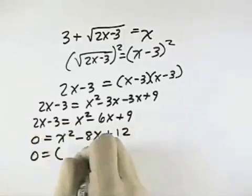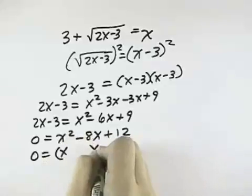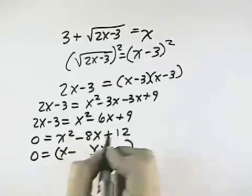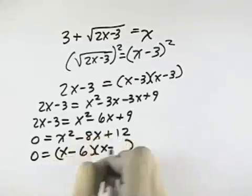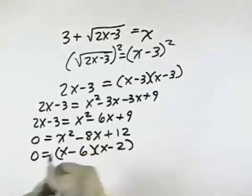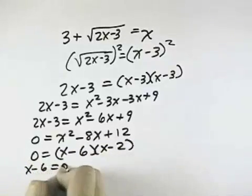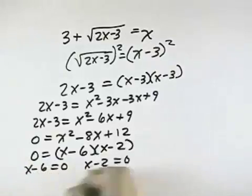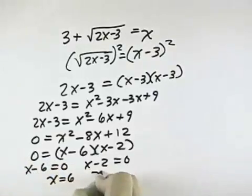And so to solve this, we need to factor it. We know the first terms will be x and both sides will be negative. And to get a negative 8 in the middle, 6 and 2 would be the factors I would want. So I have x minus 6 equals 0 and x minus 2 equals 0. So x equals 6 and x equals 2.